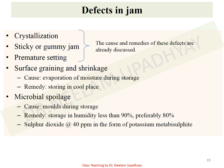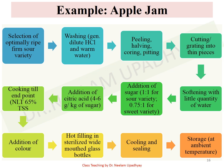There is one example of apple jam. For apple jam, select optimally ripe, firm, sour varieties as they yield very good flavored jam. Washing is done with dilute HCl and warm water, then peeling, halving, coring, pitting, and cutting or grating into thin pieces. Softening is done with a little quantity of water — at this point cooking has begun — and then sugar is added.